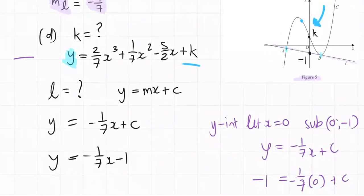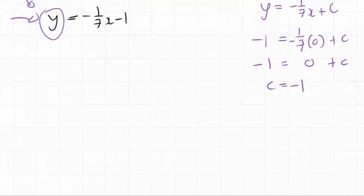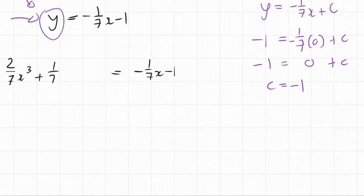So we have two lines and we can equate them to each other. These y's are at point A and B equal to each other. This is equal to this at point A and B. So it can be true and we can solve for k. It's only one unknown. So we get minus one over seven x minus one equal to the curve 2 over 7x³ plus 1 over 7x² minus 5 over 2x plus k. That's our unknown.